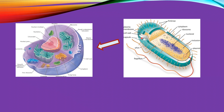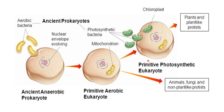Prokaryotic cells are simpler than eukaryotic cells, as we have discussed. But endosymbiotic theory explains how eukaryotic cells evolved from early prokaryotes. According to the endosymbiotic theory, eukaryotes evolved from prokaryotic cells.